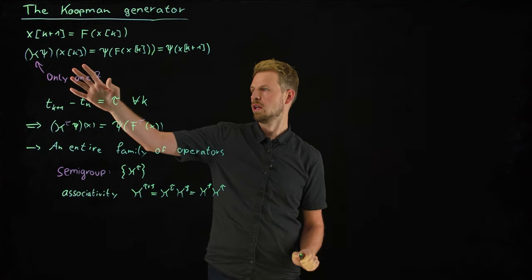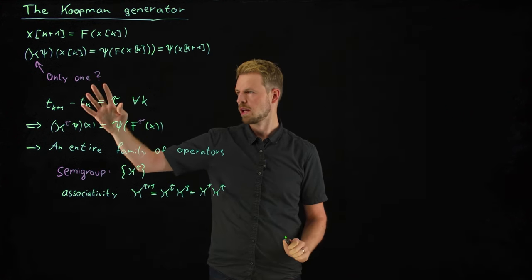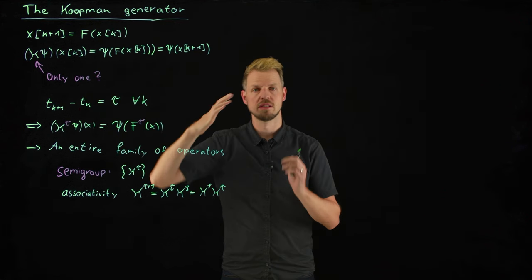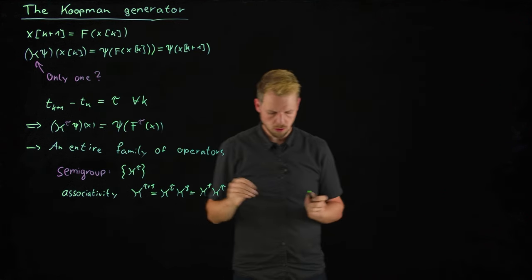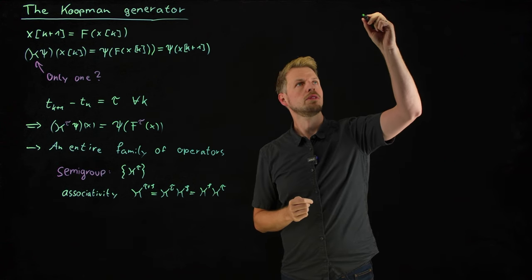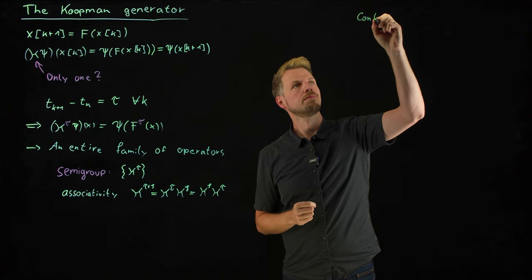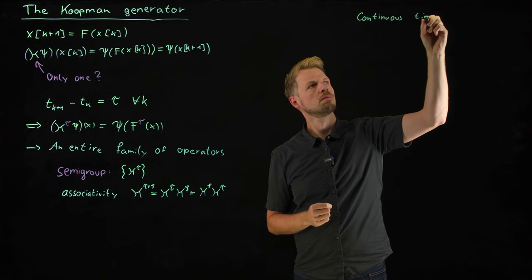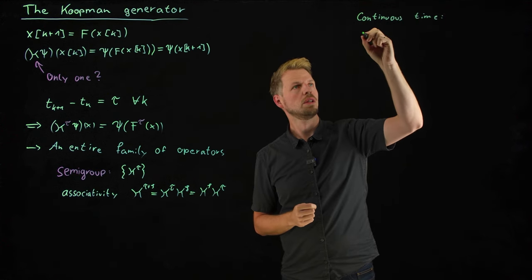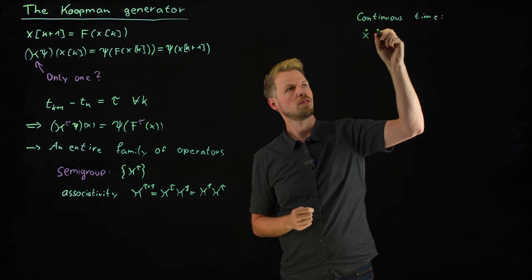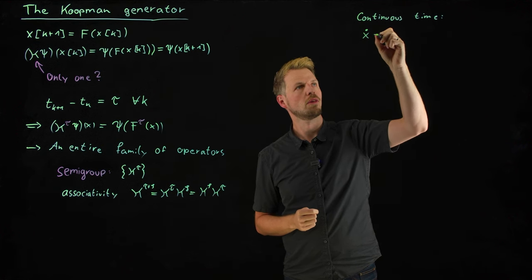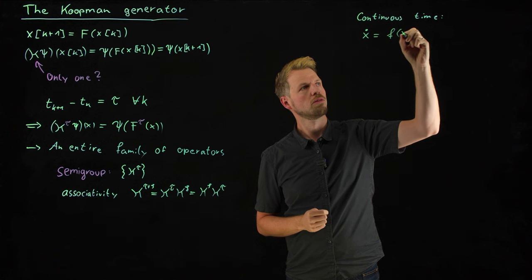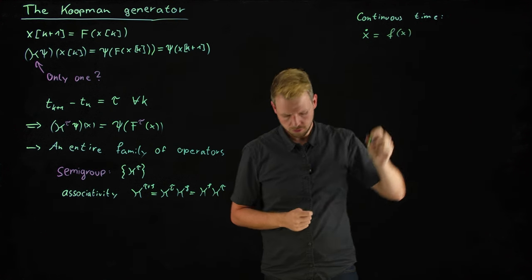Now we have this discrete time setting, and we have quite arbitrarily chosen this time step, or maybe it is given to us due to measurements. However, often we have continuous time. This means that we consider a system x dot, so the time derivative of our state, is given by a right-hand side f of x.